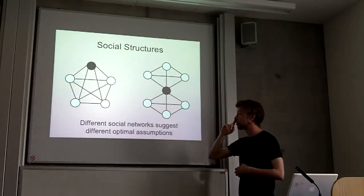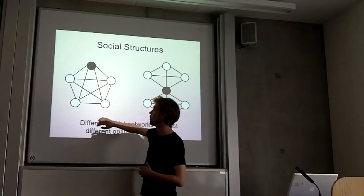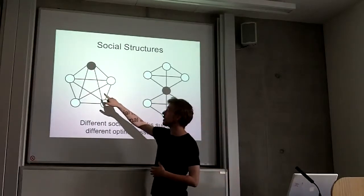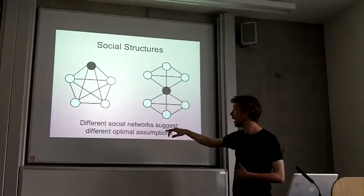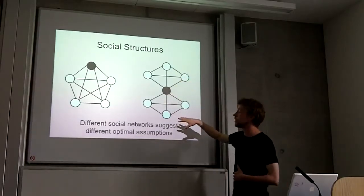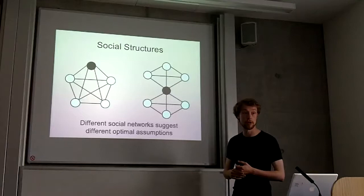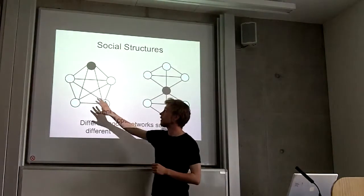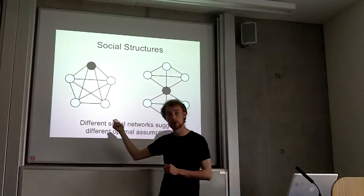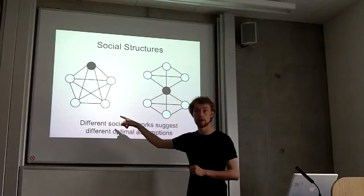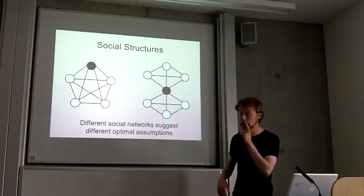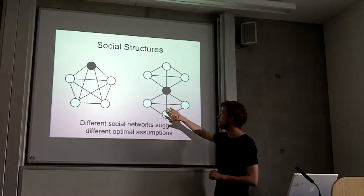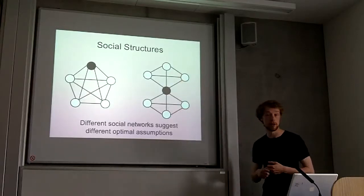So if you imagine these two network structures: on the left, the black dot is you and the white dots are your friends, and the lines show who's talking to whom. You're talking to all of your friends, and all of your friends are talking to each other. But on the right, you're talking to all of your friends, but your friends belong to two cliques who aren't talking to each other. On the left structure, it's more rational to assume that everyone's speaking the same language. On the right, it's less rational to assume that, and these two cliques might be slightly different in the way they speak.